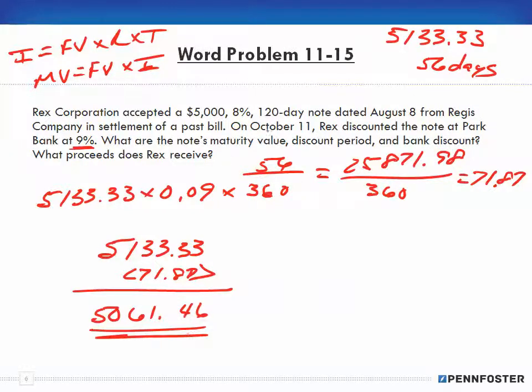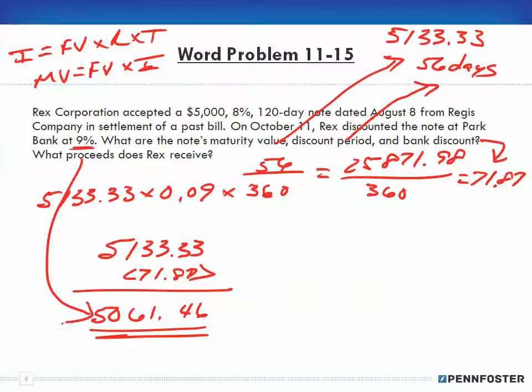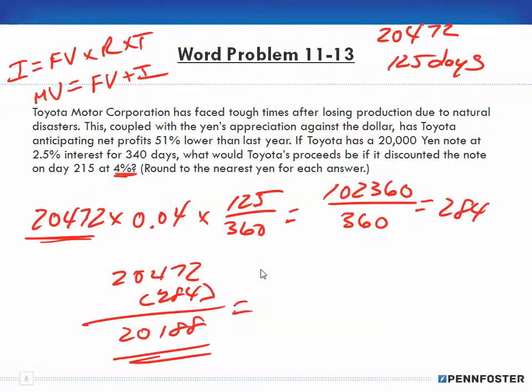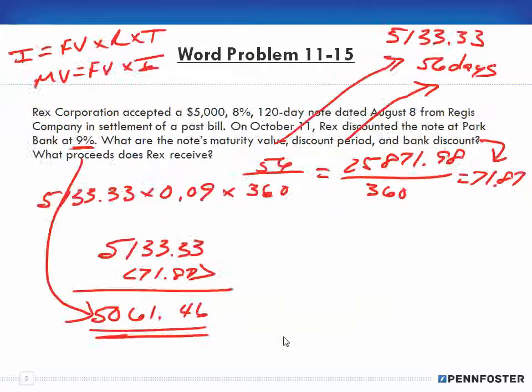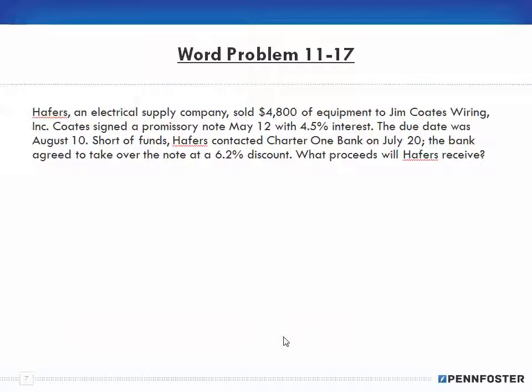So our note's maturity value is that, the discount period is that, the bank discount is that, and the proceeds is that. Those four components. Notice it was the exact same thing that we did back on the previous problem. Here's our maturity value, there was the discount period, this was the bank discount, and this was the proceeds. Same thing.